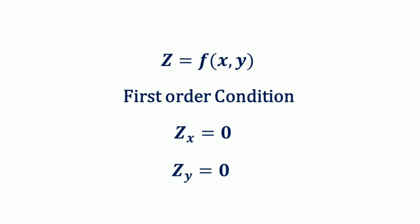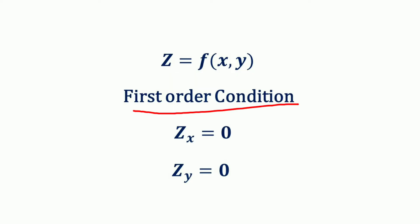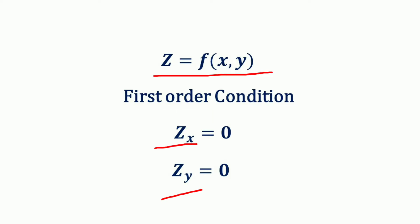Here we have a function z = f(x, y) which we want to optimize. The first order condition for optimization is to take the partial derivative with respect to the variables. Since we have two variables, x and y, the first order condition is taking the partial derivative with respect to x and the partial derivative with respect to y, and equating both to zero.